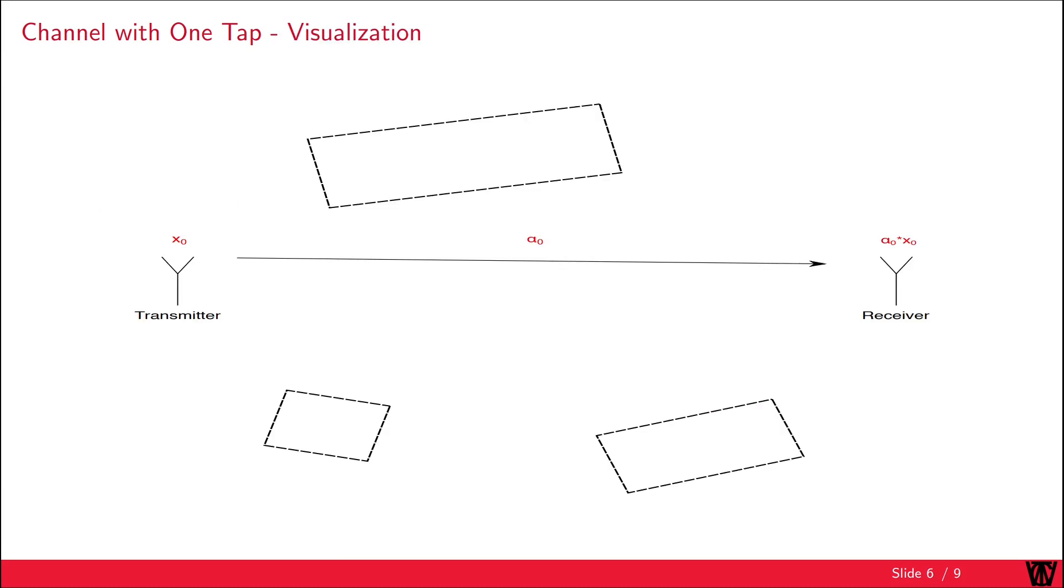The behavior of the one-tap channel can also be illustrated with this figure. For the one-tap channel, we only have the direct path. Transmitting X0 will result in a scaling by the channel coefficient alpha 0, ignoring the noise.